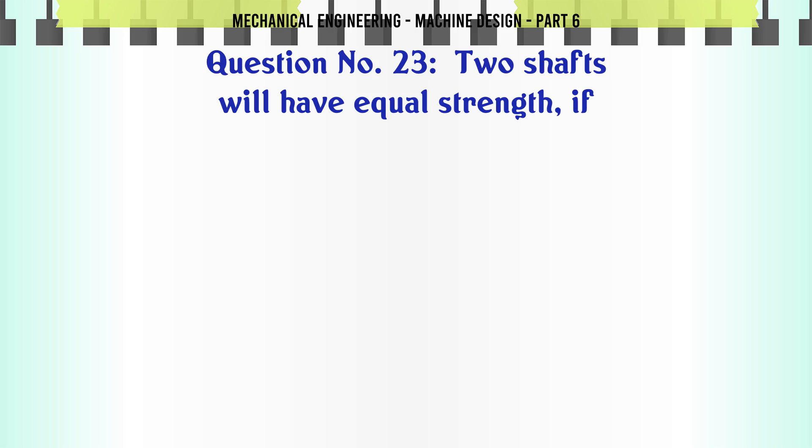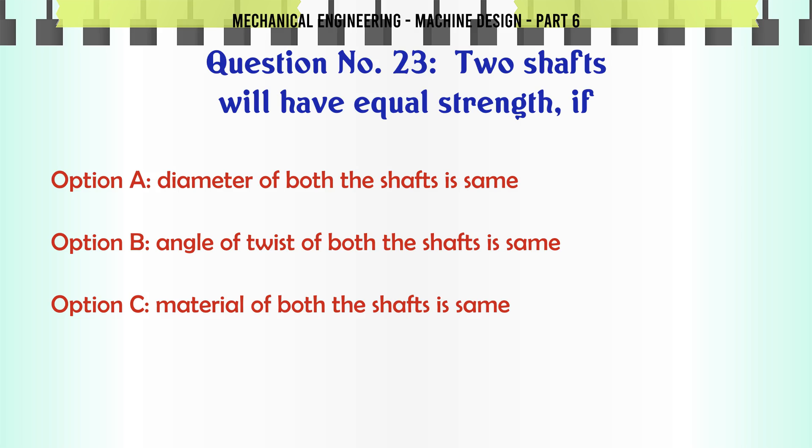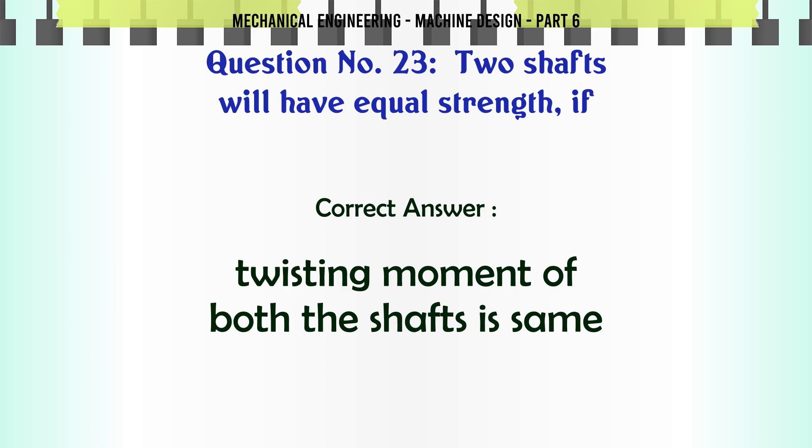Two shafts will have equal strength if: A) diameter of both the shafts is same, B) angle of twist of both the shafts is same, C) material of both the shafts is same, D) twisting moment of both the shafts is same. The correct answer is twisting moment of both the shafts is same.